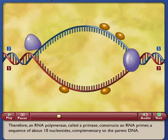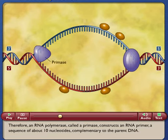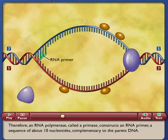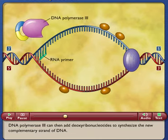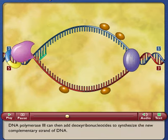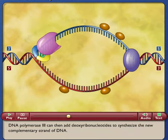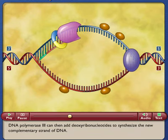Therefore, an RNA polymerase called a primase constructs an RNA primer, a sequence of about 10 nucleotides complementary to the parent DNA. DNA polymerase 3 can then add deoxyribonucleotides to synthesize the new complementary strand of DNA.